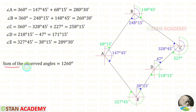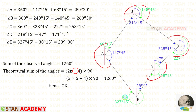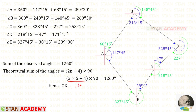Now let us find the sum of the observed angles by adding all 5 exterior angles. We get 1260 degrees. The formula to find the theoretical sum of exterior angles is (2N + 4) × 90 degrees, where N is the number of stations. With N = 5: (2×5 + 4) = 14, and 14 × 90 = 1260 degrees. Both values match, confirming our answer is correct. This concludes the session — thank you for watching.